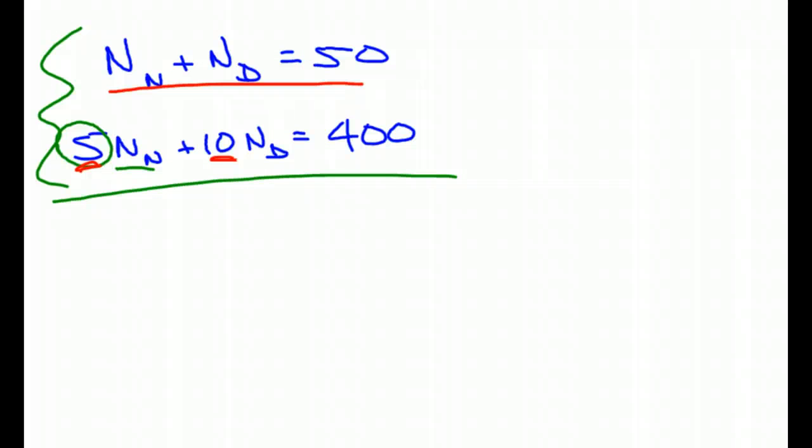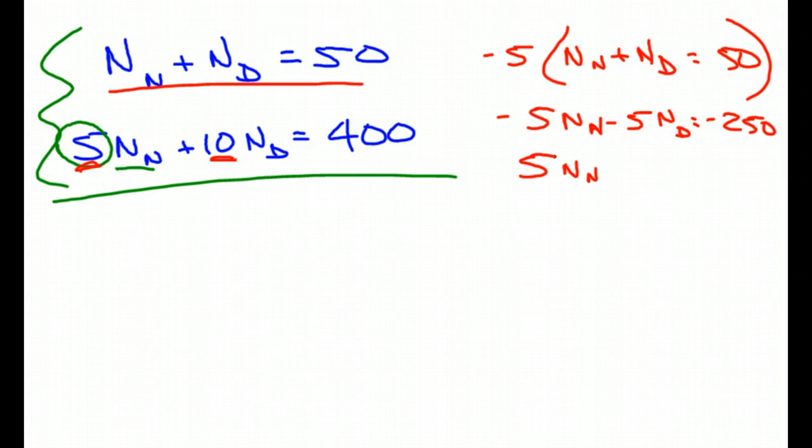Okay, so what do you want to multiply the top by, Elias? Negative 5. Okay, so we're going to multiply the top by negative 5. So number of nickels plus, I'm going to kind of draw this out a little bit further. I don't want my parentheses there. I want it there. Okay. So that gives me, no. Erase that. Okay. So that minus 5NN plus ND equals negative 250.